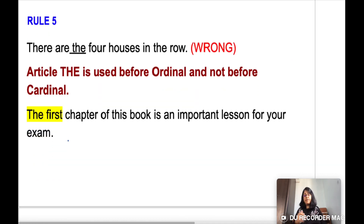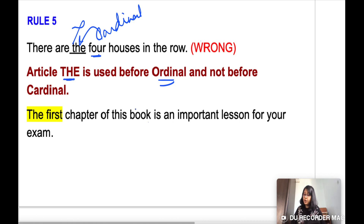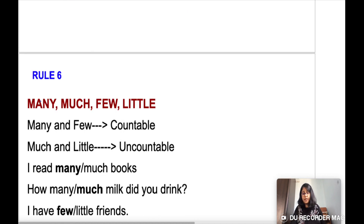Rule number five: the article 'the' is used before an ordinal adjective but not before a cardinal. For example, 'There are the 4 houses in the row' is wrong because 4 is cardinal. But 'The first chapter of this book is an important lesson for your exam' is correct because 'first' is an ordinal adjective.